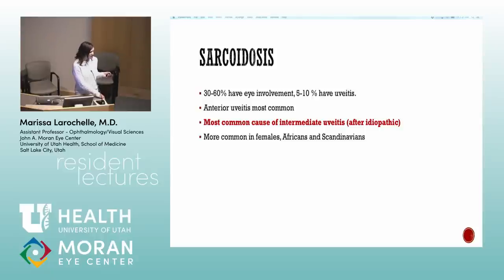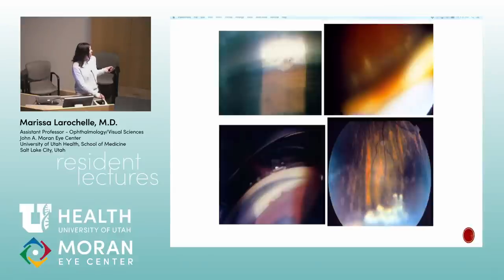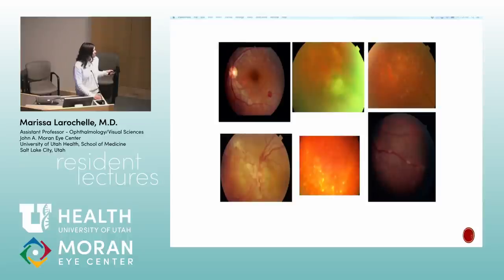Sarcoid posterior manifestations include non-caseating granulomas. In the angle, tent-shaped PAS is reportedly very specific for sarcoid. Brölin nodules are seen on the iris. Peripheral chorioretinal lesions can be present. Candle wax drippings describe perivascular exudates. Commonly we see peripheral atrophic-appearing yellow spots inferiorly in the retina — I see that a lot in sarcoid.